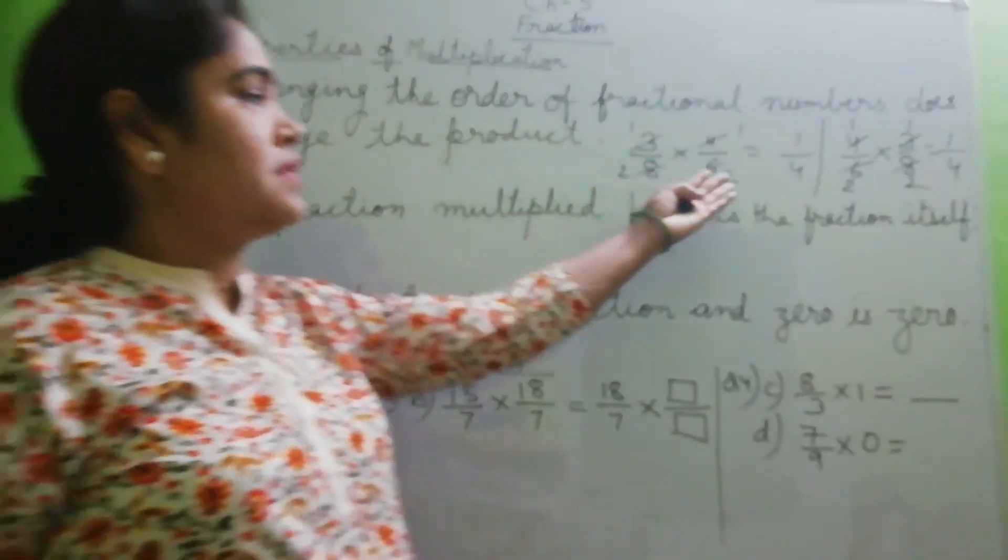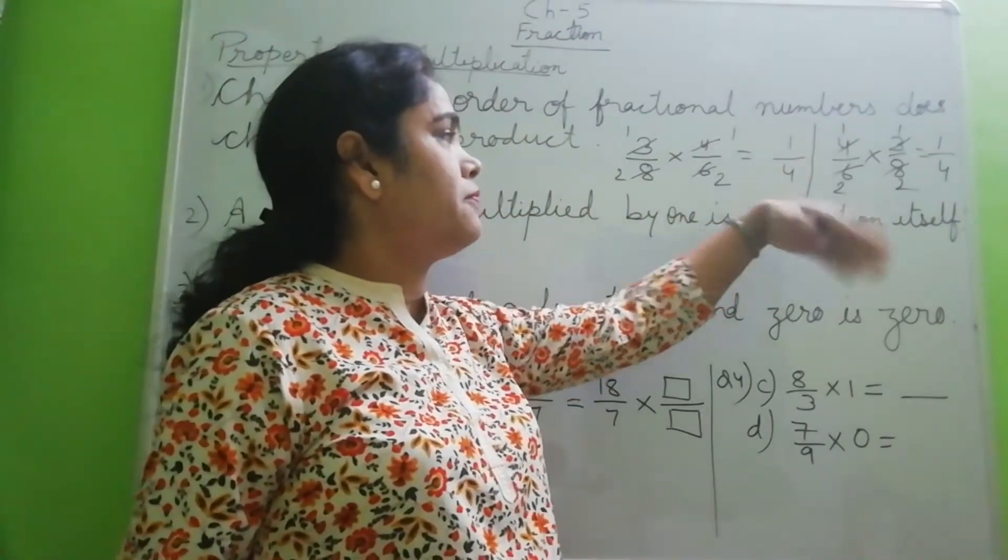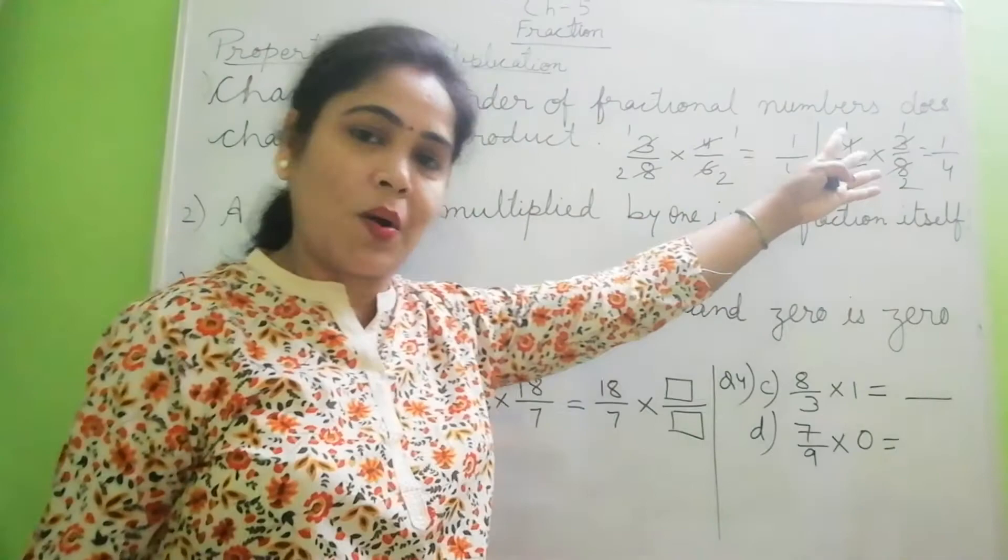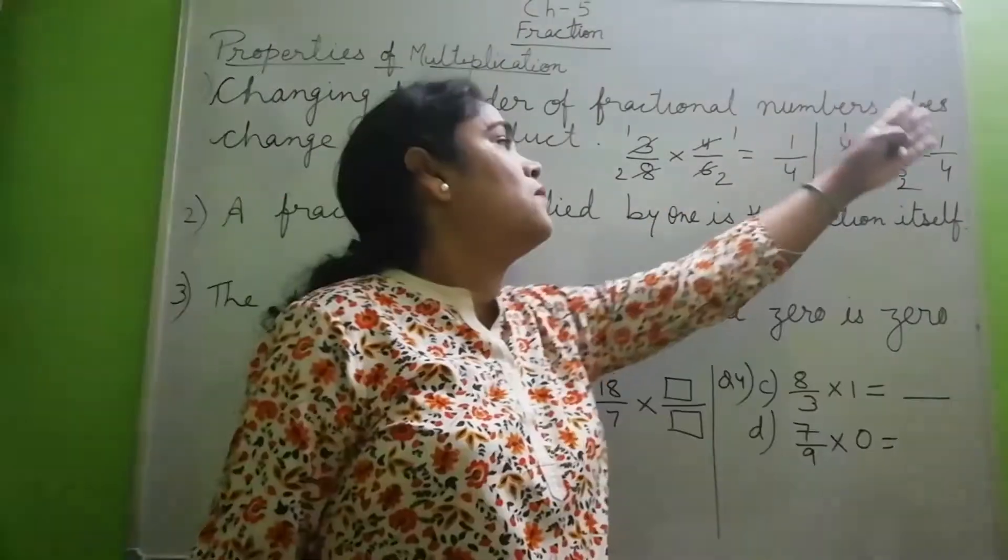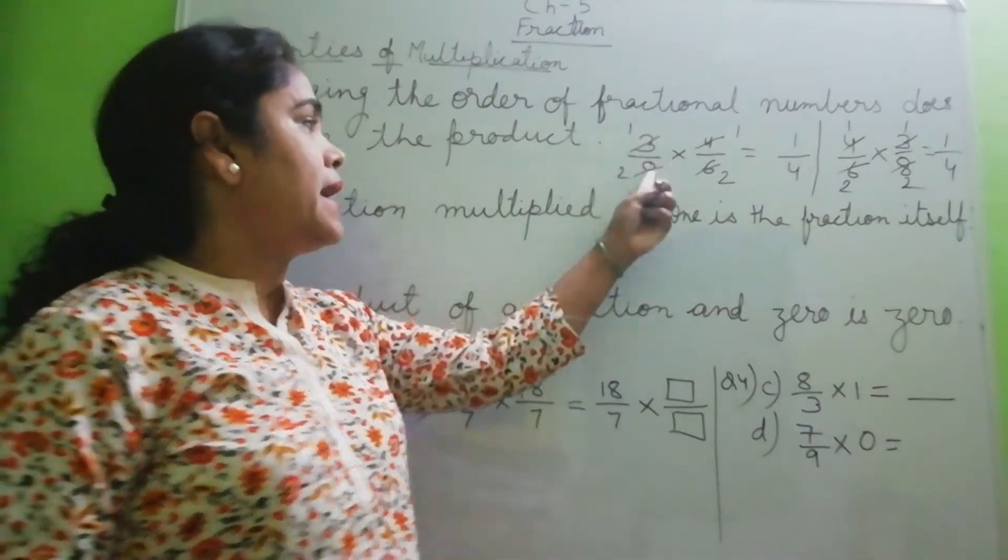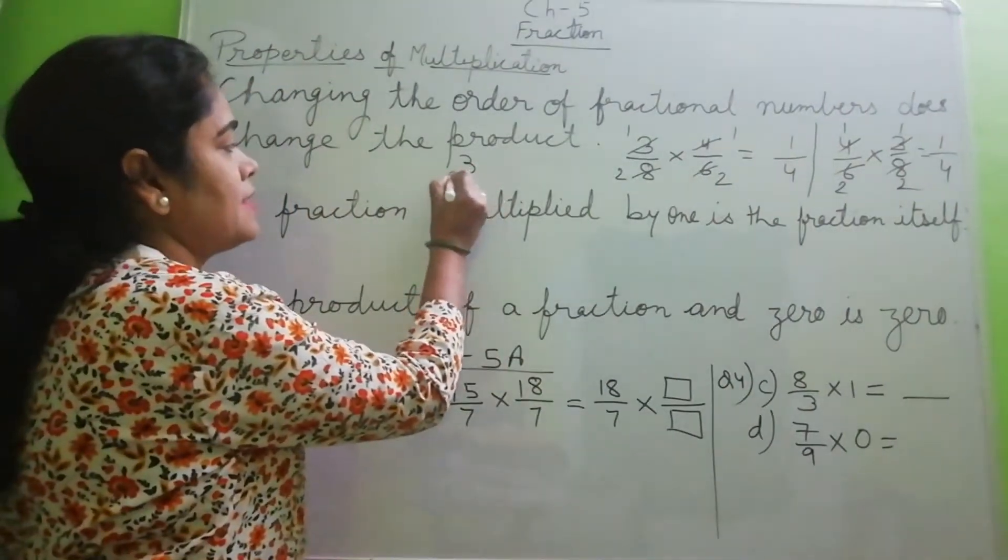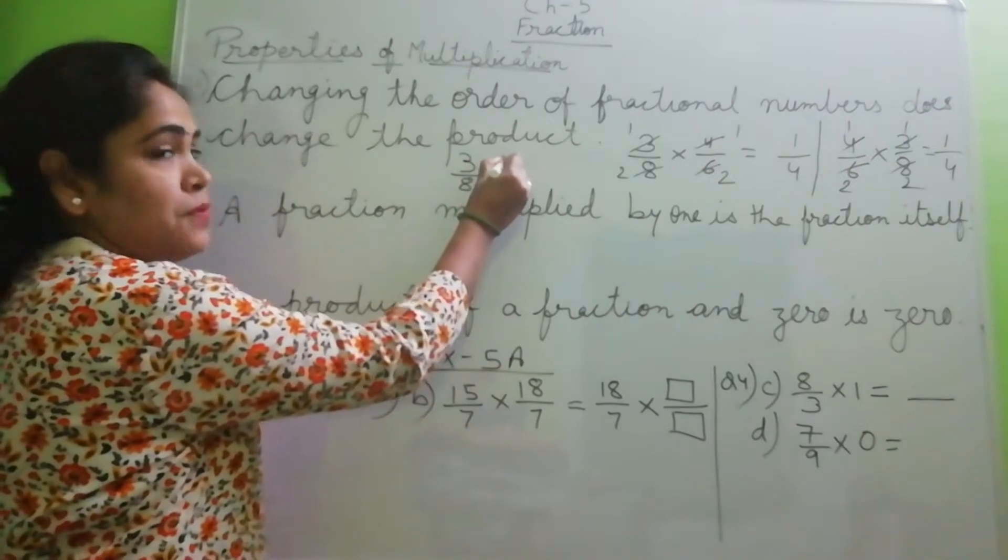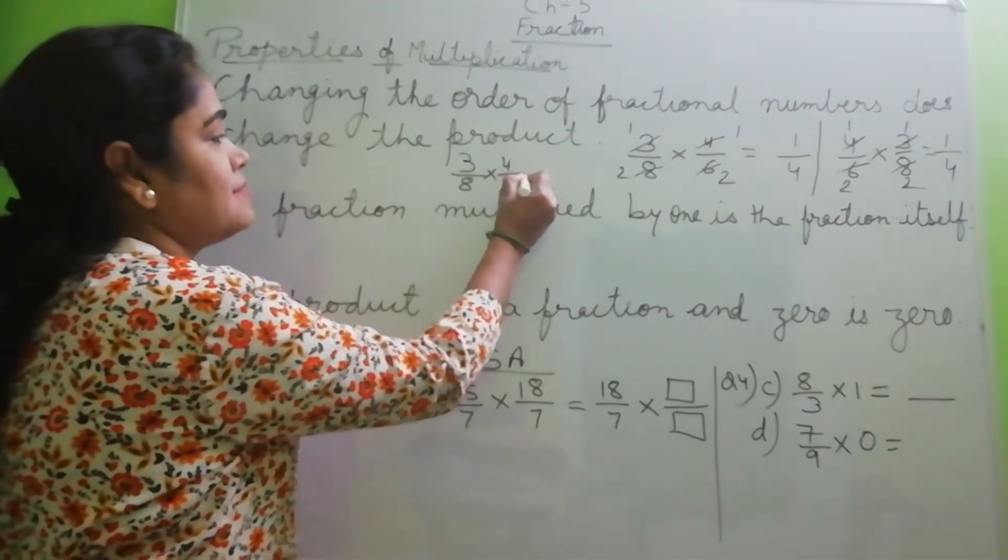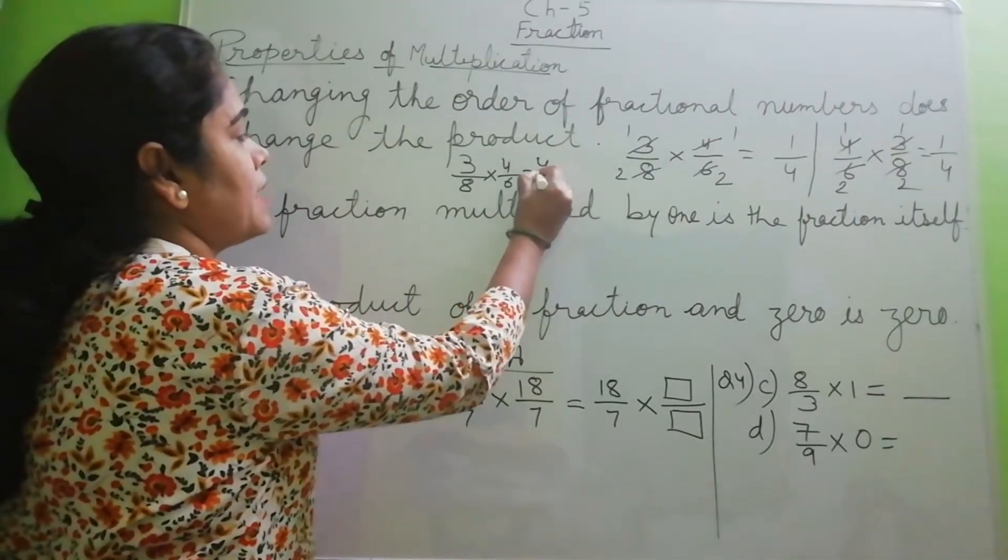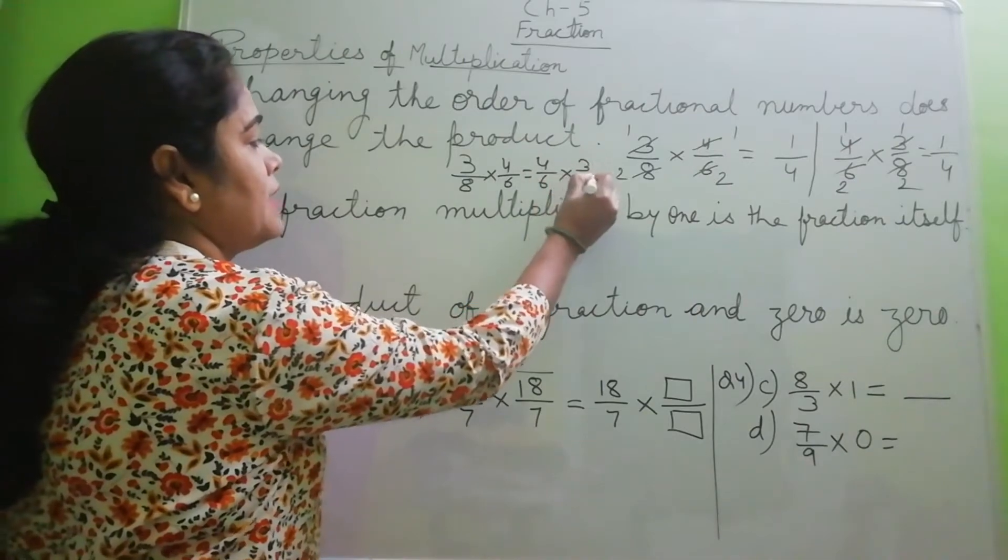So in both cases, we have seen that our answer is 1 by 4. Here also, when we have changed the order, our answer is 1 by 4. So we can say that 3 by 8 into 4 by 6 is equal to 4 by 6 into 3 by 8.